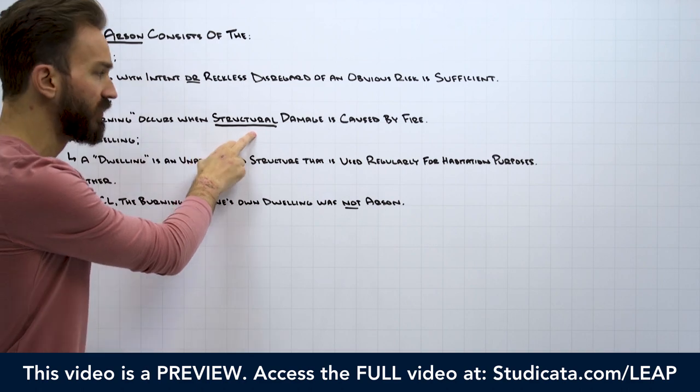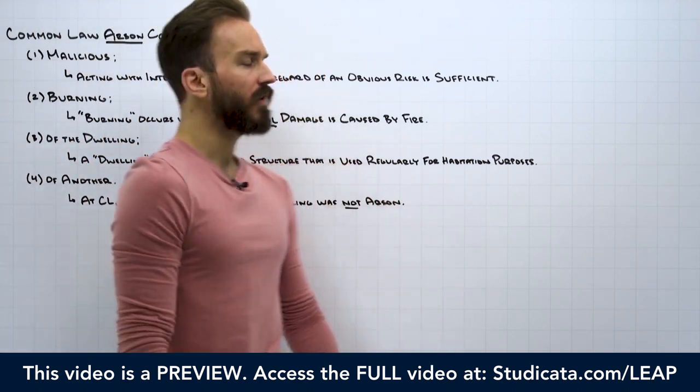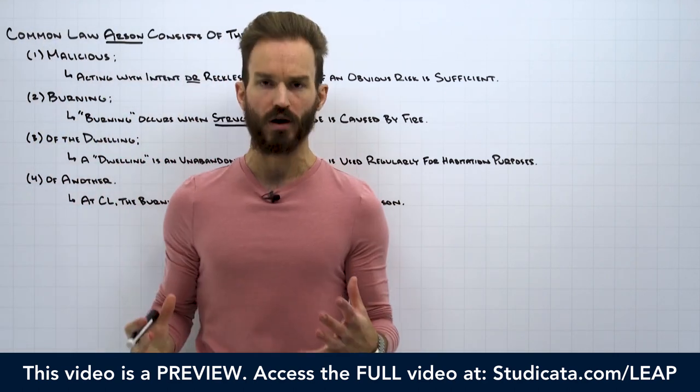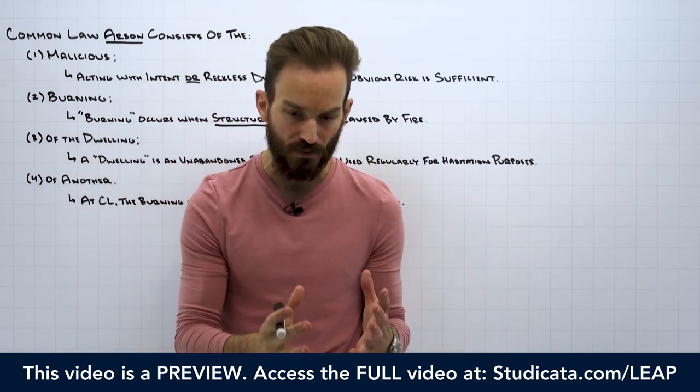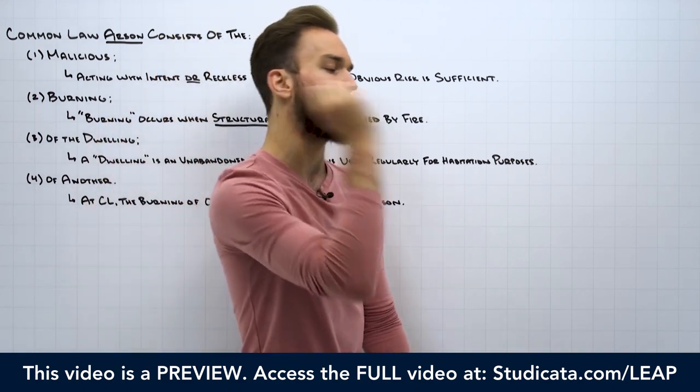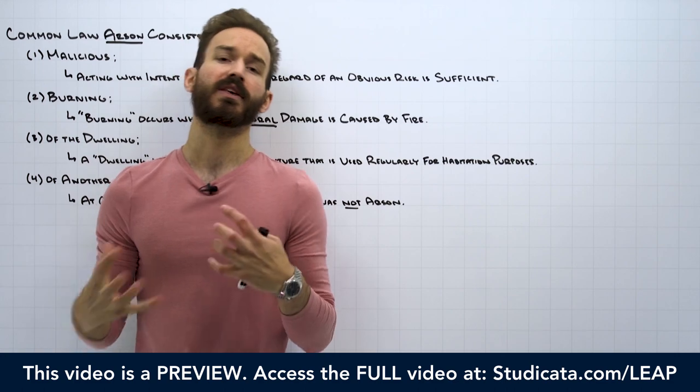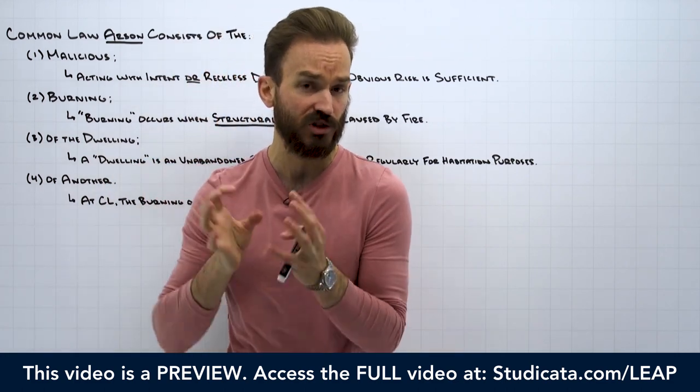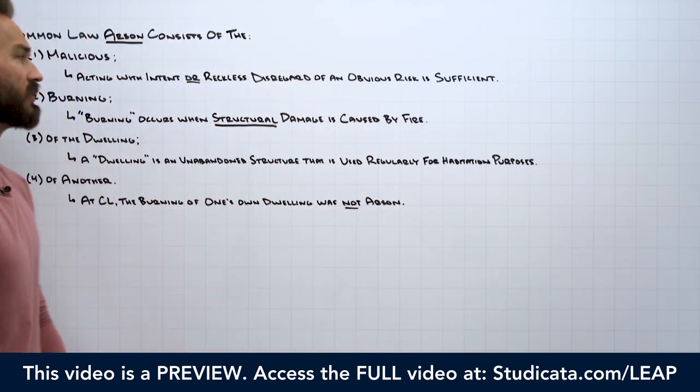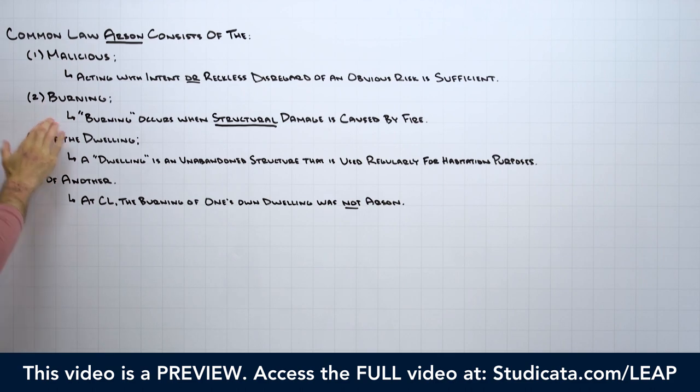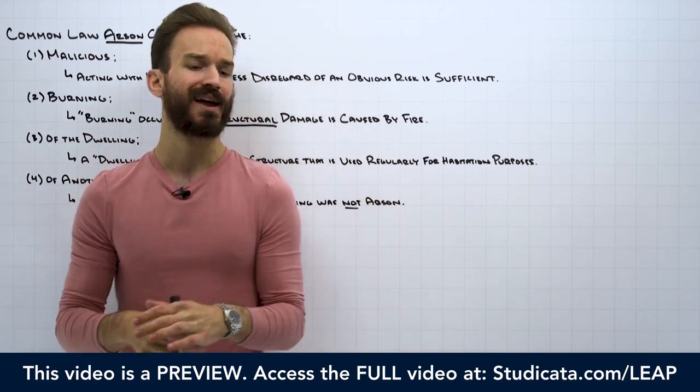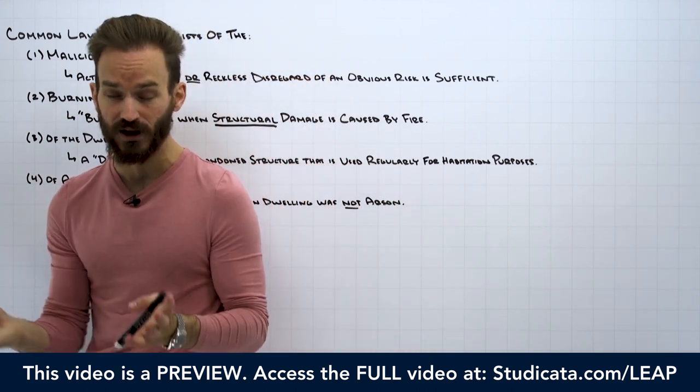Burning occurs when structural damage is caused by fire. The operative word here is structural damage. At common law to be liable for arson, there has to be actual damage to the structure of the dwelling. So say somebody lights a couch on fire in the middle of the family room, and the couch disintegrates and melts and there's a lot of damage to the couch, but all the surrounding areas are untouched by the fire. Is that common law arson? The answer is no, because that's not a burning. We need structural damage. The integrity of the structure has to be affected in some way, not just some item burning within the structure.